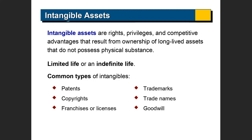Now we come to intangible assets. Intangible assets do not have any physical substance. Examples include patents, copyrights, franchises, rights, trademarks, trade names, goodwill, etc. We're going to talk about all of these individually — what they are and exactly what they do for the company.